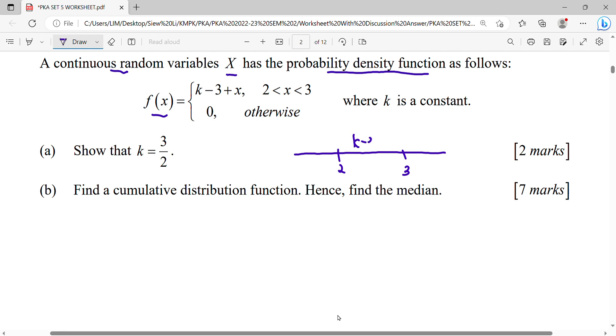K minus 3 plus X. Other than that, no function. Other than that, 0 means here no function, no area. So for the first part, question is show that K equals to 3 over 2.